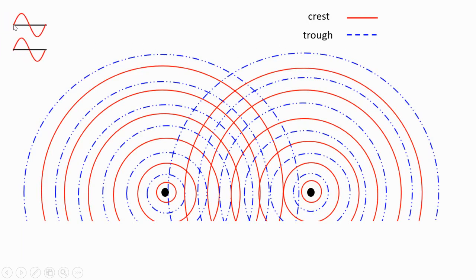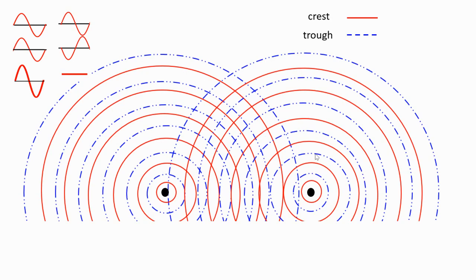Remember that when we have two waves traveling in phase, we have constructive interference. And when we have two waves traveling out of phase, we have destructive interference. Those two waves are independent waves produced by two independent sources, traveling at the same time in the same medium. So some areas are in phase and some are out of phase, and we need to relate these with constructive and destructive interference to explain the dark areas and the bright areas.